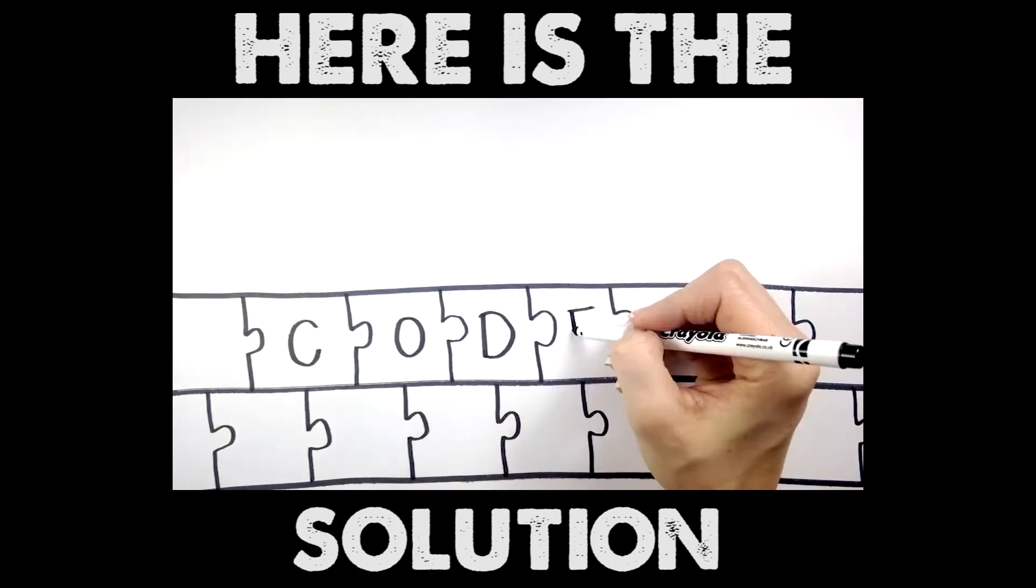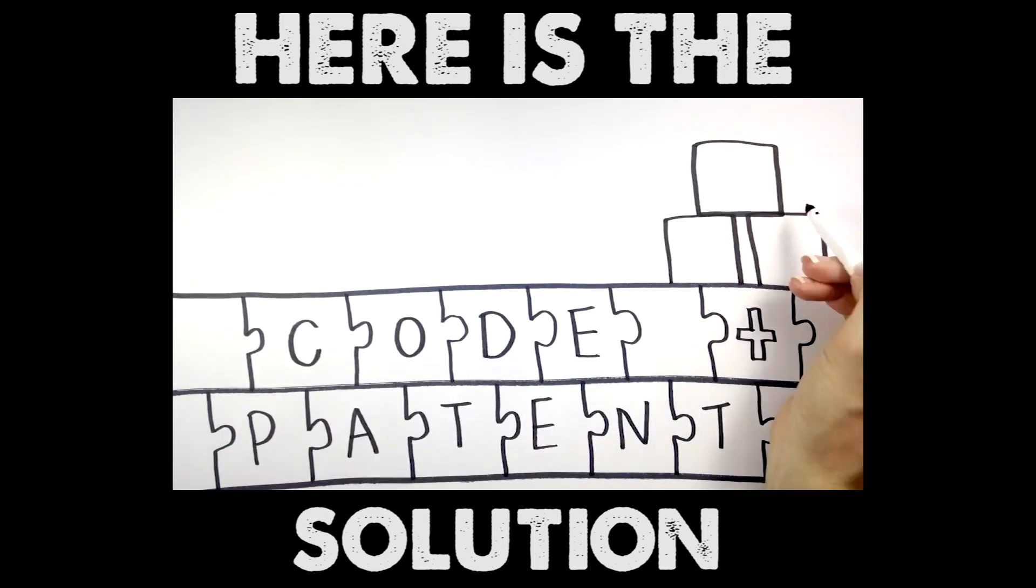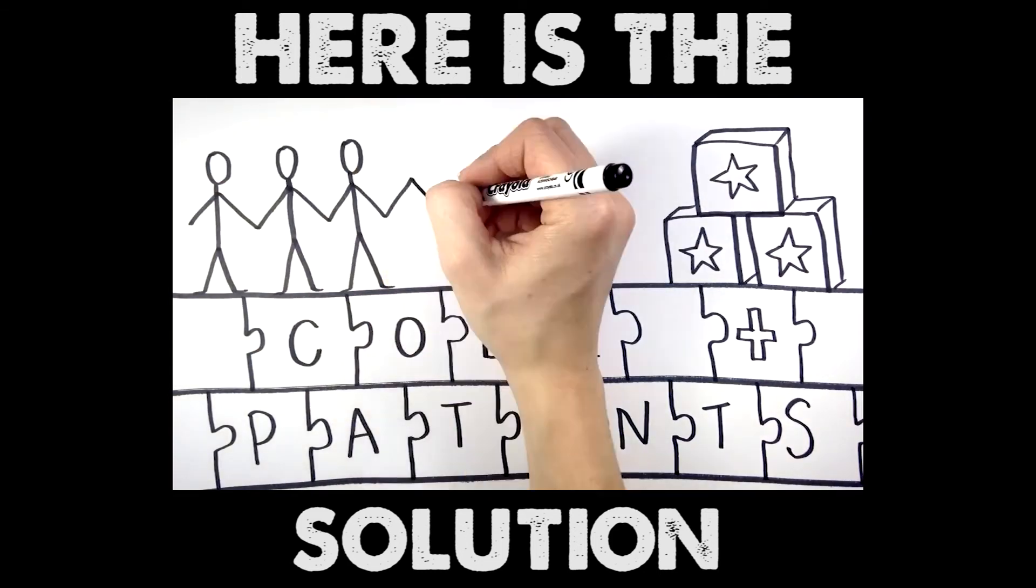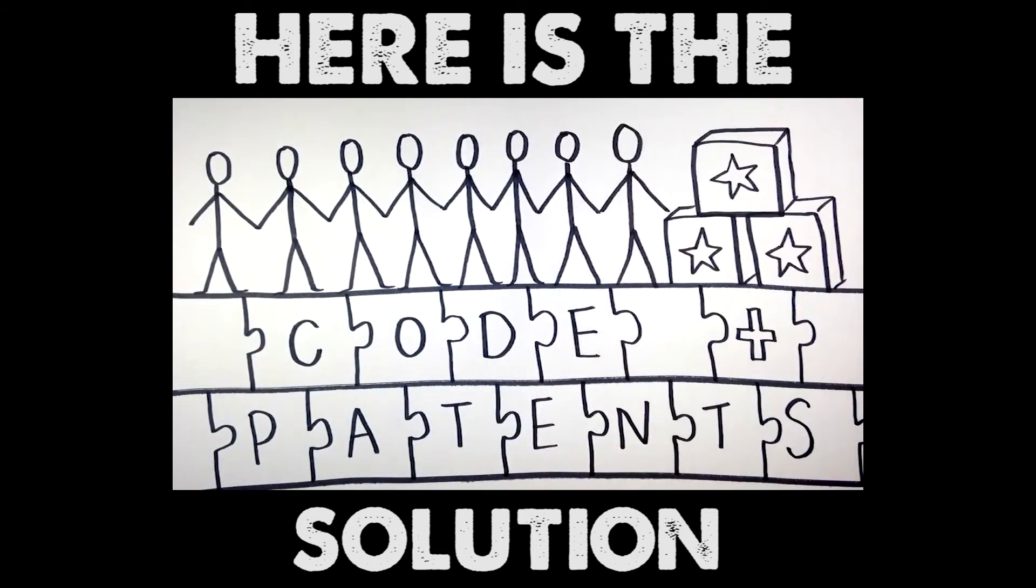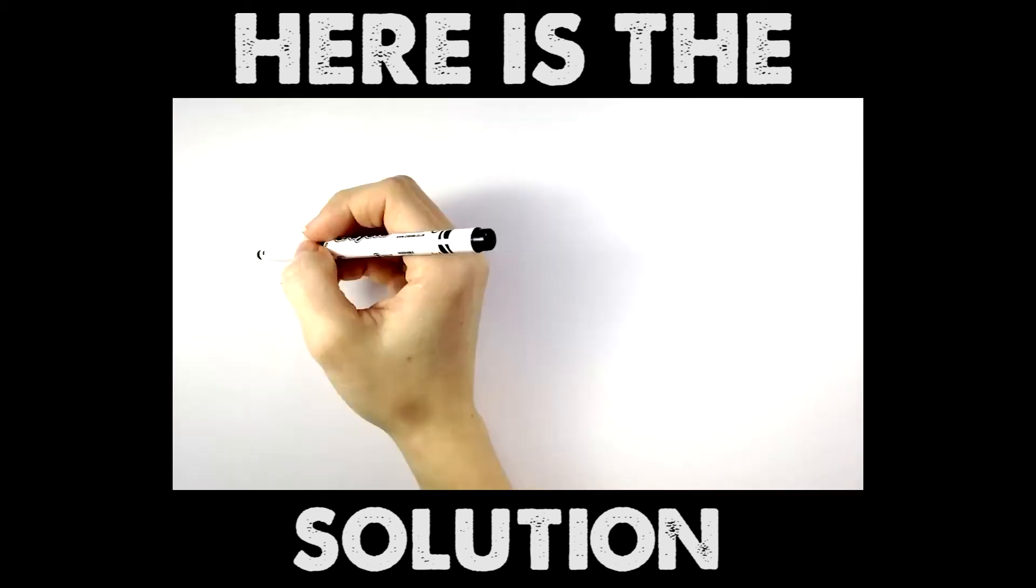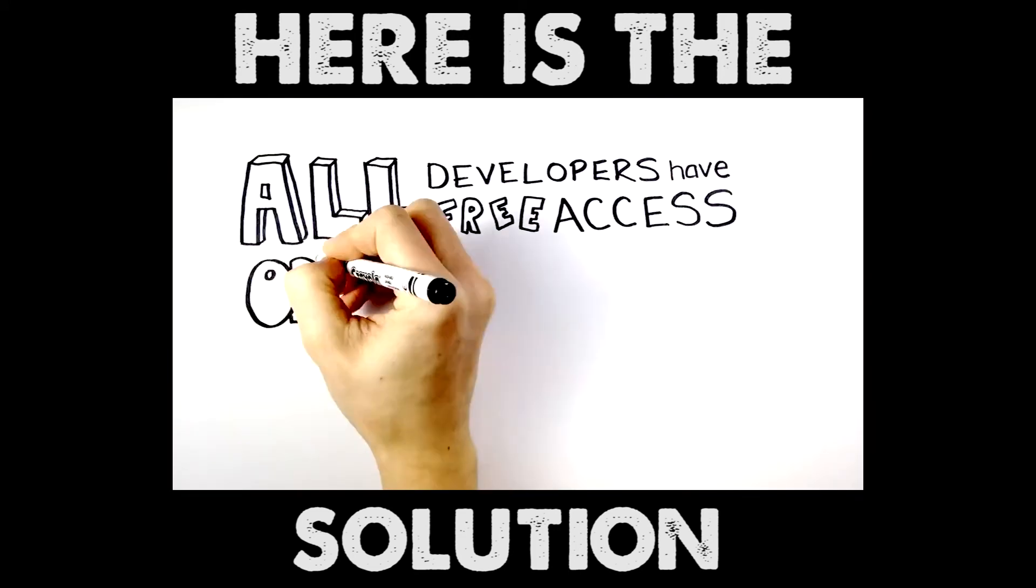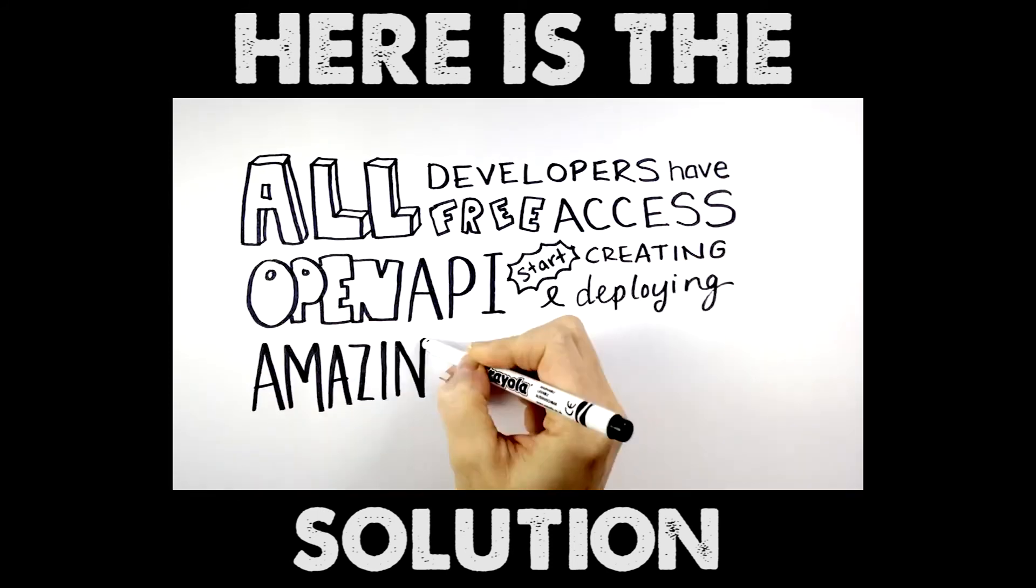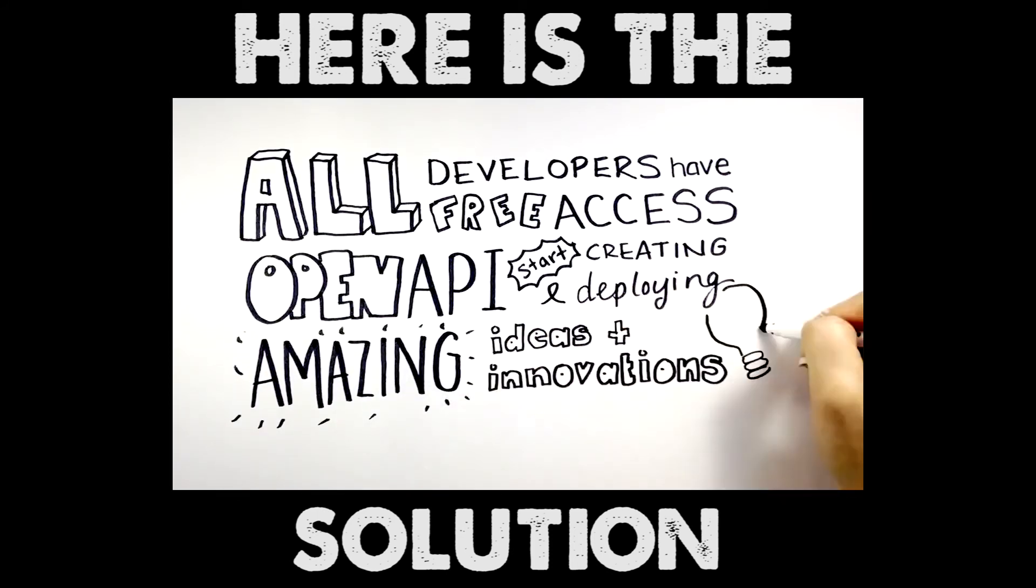Anyone can use the code and patents to build these powerful new products and services at no cost and without fear of the service ever being compromised or stopped. This is a network of equals and ownership belongs to all users all of the time. All developers have free access to an open API and can start creating and deploying amazing ideas and innovations that could change the world right now.